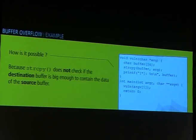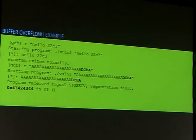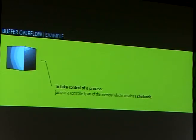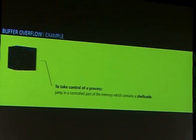When the function exits, you can say to the process to jump to another part of the memory. This is possible because the function string copy doesn't check if the destination buffer is big enough to contain the data of the argument. Here is the proof using GDB, where you launch the same software. You see that at first it's okay, and then you see these bytes overwrite the return address, because we receive a signal — in this case, a segmentation fault — because at this address you cannot execute an instruction.